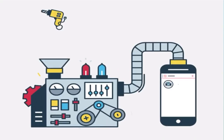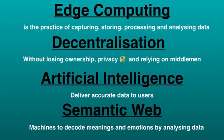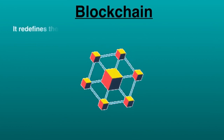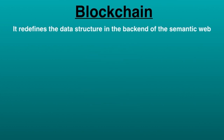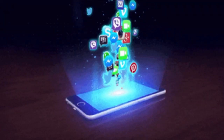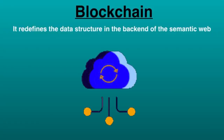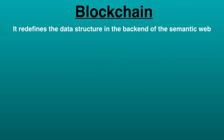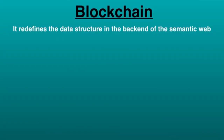The semantic web would enable machines to decode meanings and emotions by analyzing data — machines would process data in a human-like way. Finally, blockchain is the foundation of Web 3.0, as it redefines the data structure in the back end of the semantic web. Using blockchain technology, users will be able to own their data with no central controlling authority. Imagine it as a kind of bookkeeping where many computers at once host data that is searchable by anyone, operated collectively by users rather than a corporation. Cryptocurrency was also developed on blockchain technology.